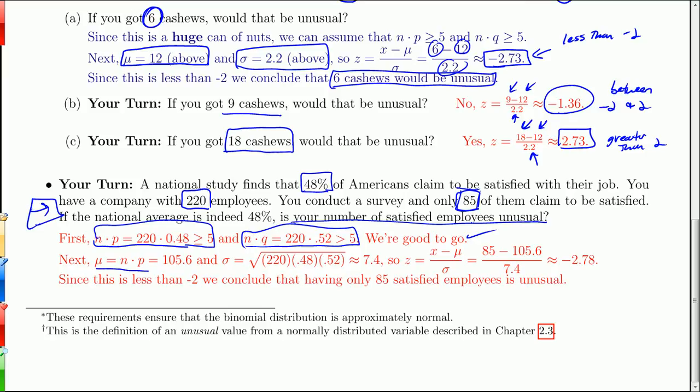So when we calculate the mean, we get 105.6. So that's how many satisfied employees you would expect on average from groups of 220. You have 85, so you're below average. Getting the standard deviation is the square root of n times p times q. You have to do that in your calculator, and you get 7.4. So we have a mean and a standard deviation. So we're going to take our x, which is 85. We have x minus mu, 85 minus 105.6, over sigma 7.4, which is negative 2.78. So as far as the number of satisfied employees goes, the z-score is definitely less than negative 2. And so that makes this value unusual. It makes 85 unusual. It's way below average. So we conclude 85 satisfied employees is unusual from a group of 220.